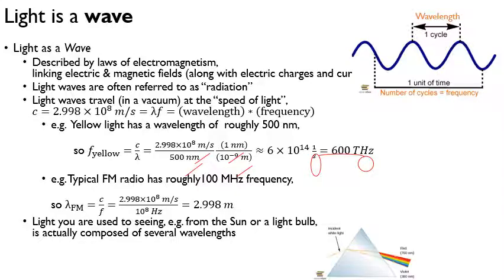Just to be clear, the light you're used to seeing is typically a mixture of wavelengths. With the exception of lasers or a neon sign, you're usually looking at sources that have a mixture of wavelengths. For instance, when you look at the sun, that white light is actually a mixture of several different wavelengths, and you can separate these out using a prism. We'll talk about that in future lectures.